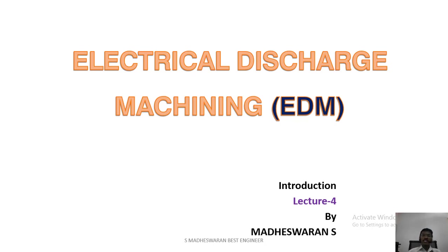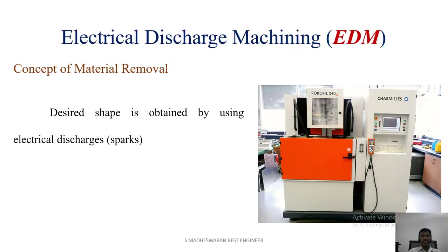Let me know the history of electrical discharge machining. This electrical discharge machining was discovered in the 1970s by Joseph Presti and developed in mid-1970s. What is the concept of material removal here? The desired shape is obtained by electrical discharge. That is, spark is produced to create the cavity.